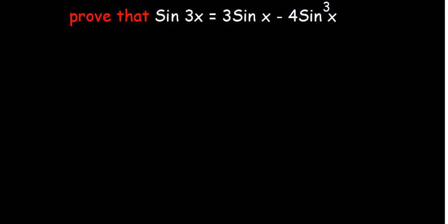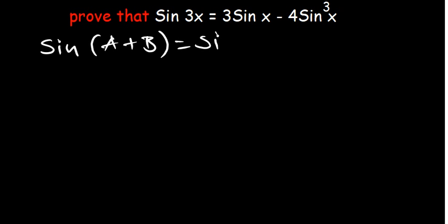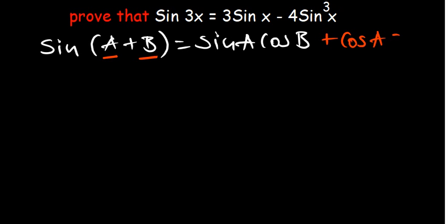Let's prove that sin(3x) = 3sin(x) - 4sin³(x). What we need to understand is that sin(a + b) is the same as sin(a)cos(b), and then for the other term, we start with cos(a) and then have sin(b).